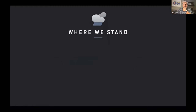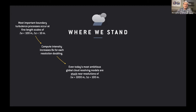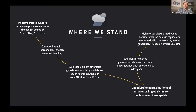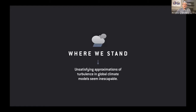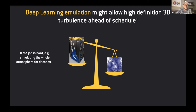That turns out to be 10,000 times more computational intensity per square meter of the planet. Compute intensity octuples for every resolution doubling in two horizontal dimensions and a time dimension. So even our most ambitious global cloud resolving models are stuck at deep convection-permitting resolutions. We have coping mechanisms like high-order closure parameterizations, but they're difficult to generalize and can fail in circumstances not envisioned by the designer. We have to accept unsatisfying approximations of turbulence in climate models.